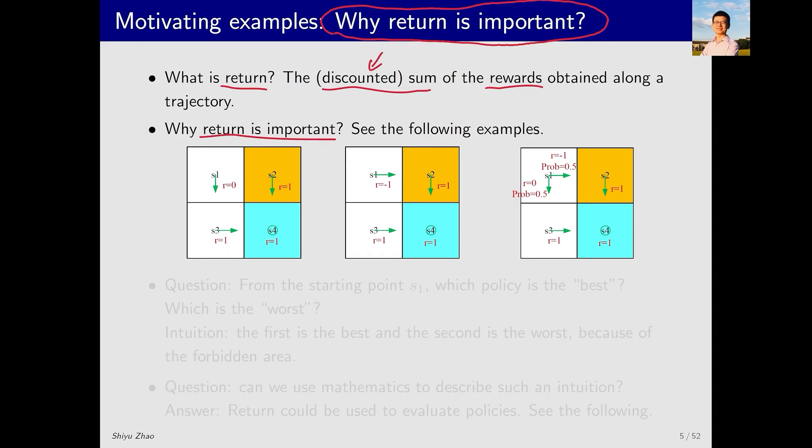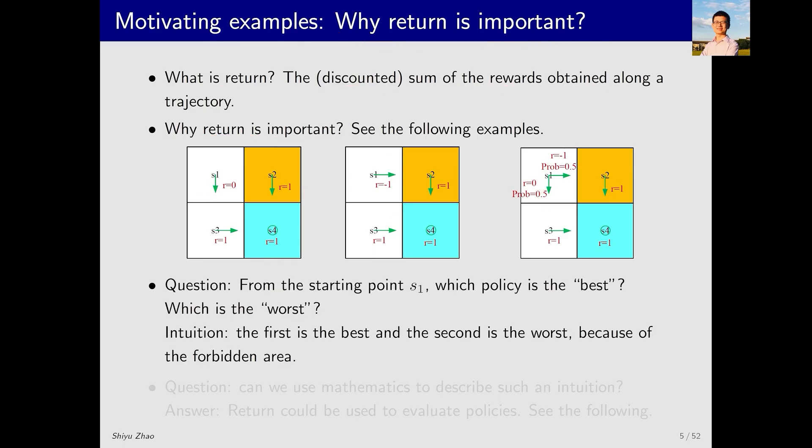Why return is important. We illustrate it with three examples. These examples have identical environments, with a target area, a forbidden area, and accessible areas. The difference between them is their policies at state S1. The first policy will move downwards from S1, the second policy will move right from S1, and the third policy has a 50% chance of moving right and a 50% chance of moving down. The policies for the other states are the same. Therefore, the question we aim to answer is, starting from S1, which policy is the best and which is the worst?